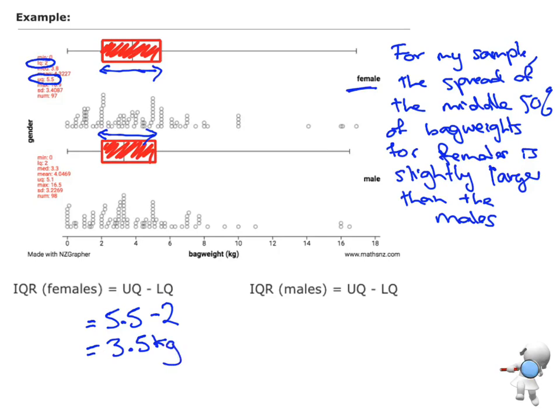Now I want to do a similar thing for the males. So they've got an upper quartile there of 5.1 and a lower quartile of 2. So I'm going to do 5.1, take away 2. And that's going to give me an interquartile range of 3.1 kg. And so again, there's my evidence that the females' interquartile range is slightly bigger than the males' interquartile range.